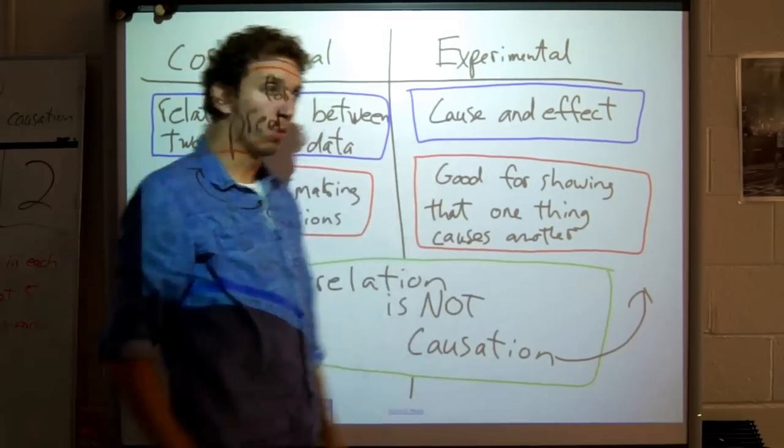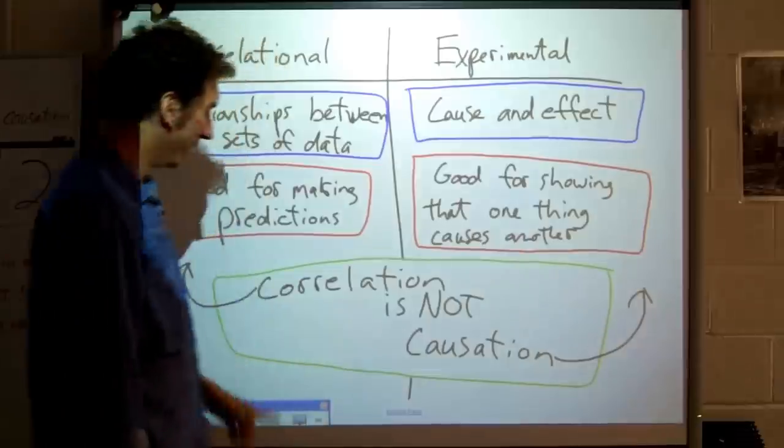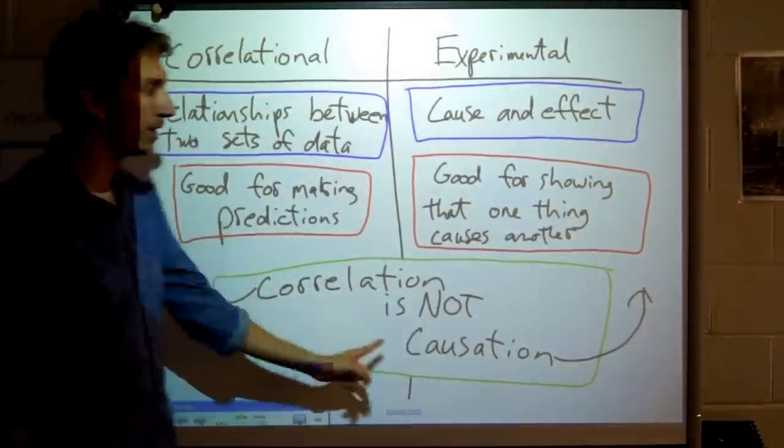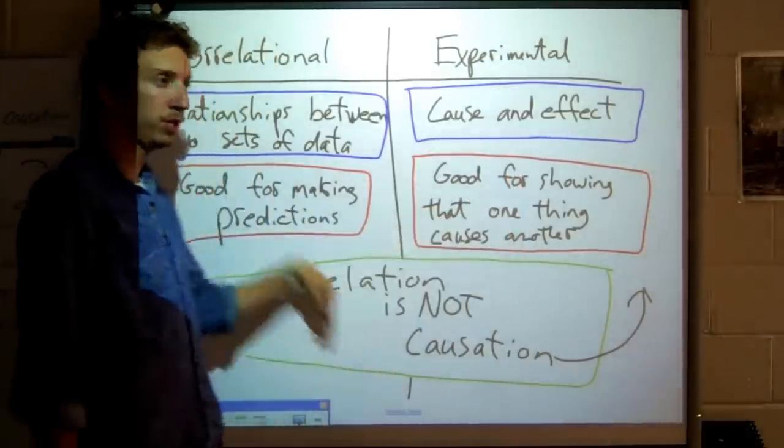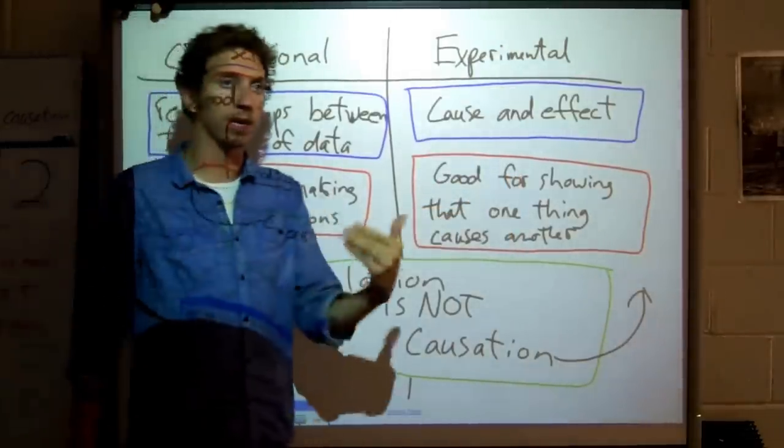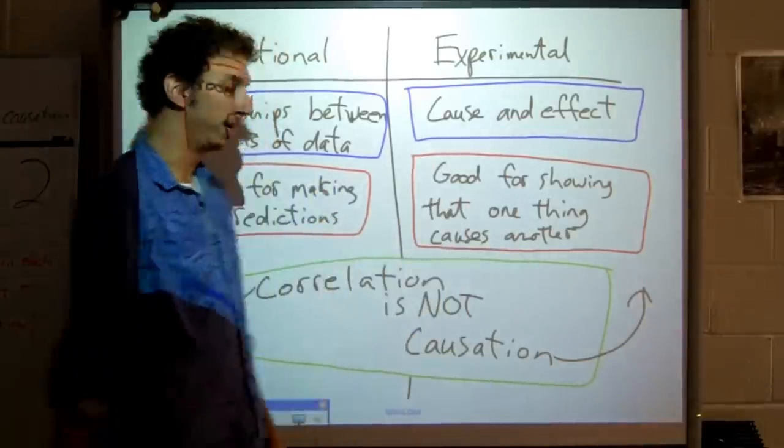So, correlations show relationships where experiments show cause and effect. You want to remember the one big thing, the one big point is that correlation is not causation. Just because two things are correlated does not mean that one thing causes the other. And we're going to get into that here.